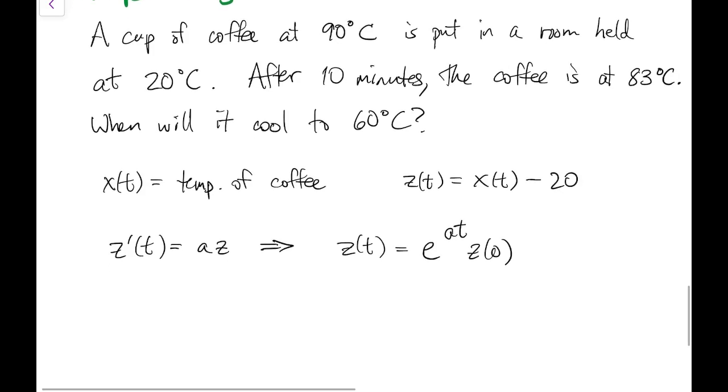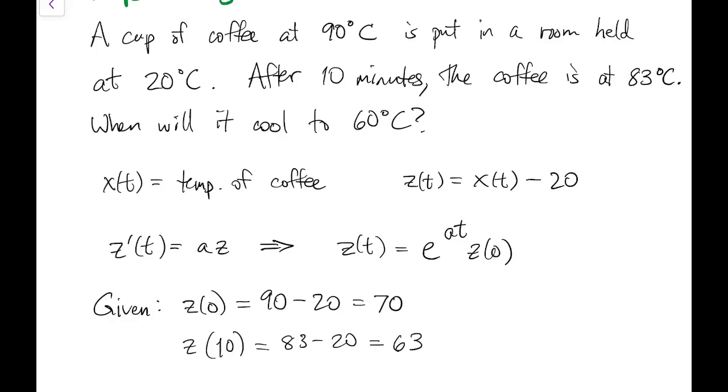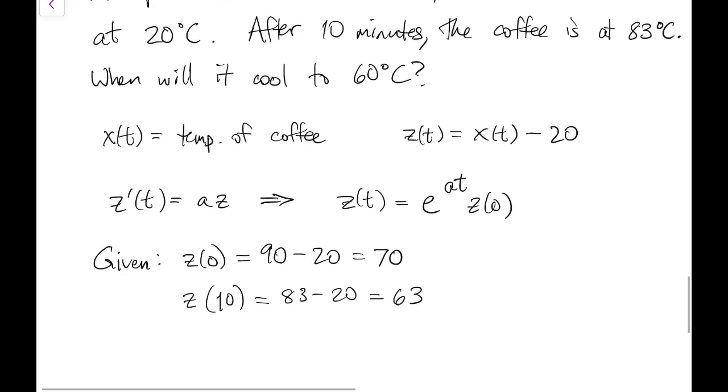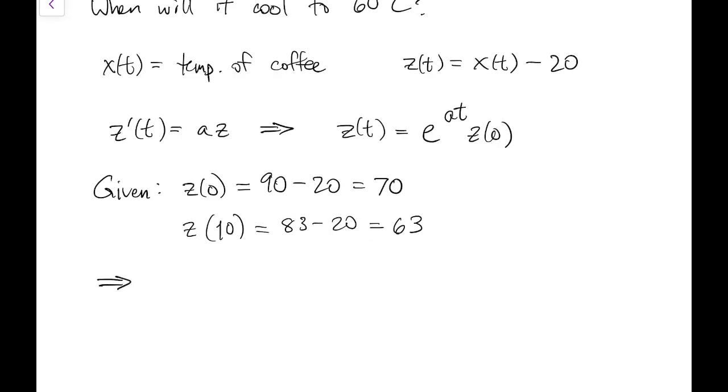Z satisfies an exponential decay. So we have two unknowns here, a and z of 0. We are given z at 0. Coffee is initially at 90 degrees, so z is initially at 70. We're also given z at 10. That must be 63. So if we put in t equals 10 and z of 10 equals 63, then we can solve for a using a little bit of algebra.